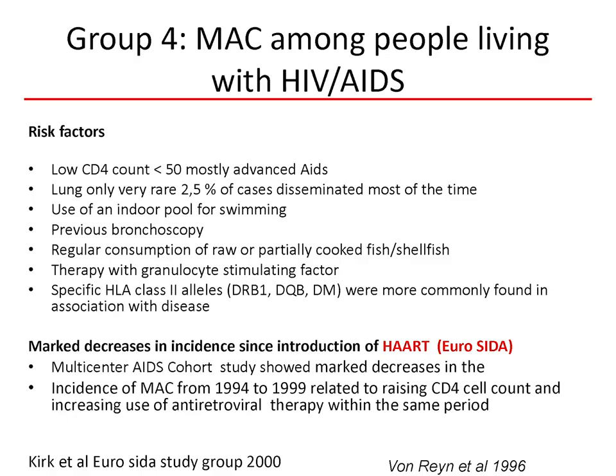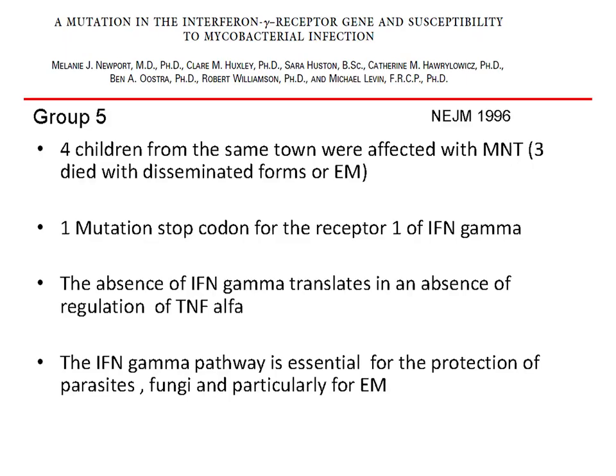The fourth group is HIV — people living with HIV and AIDS. These patients develop more disseminated disease with low CD4 counts, usually below 50. The lung is rarely the primary organ affected. However, with the introduction of highly effective antiretroviral therapy, the incidence of MAC in HIV patients has decreased very significantly.